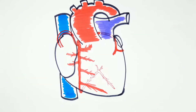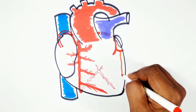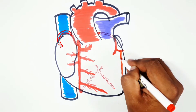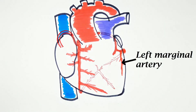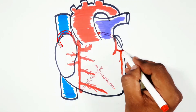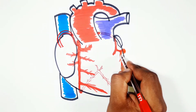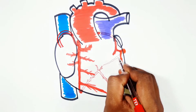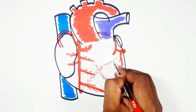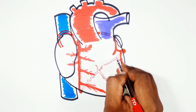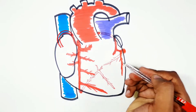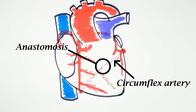The circumflex artery gives off the left marginal artery, which runs along the left margin of the heart. The circumflex artery then runs around the left margin to run in the atrioventricular groove at the back of the heart, where it anastomoses with a similar branch from the right coronary artery. In about 40% of hearts, the SA nodal artery is given by the circumflex artery.